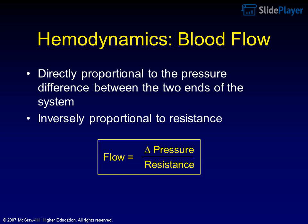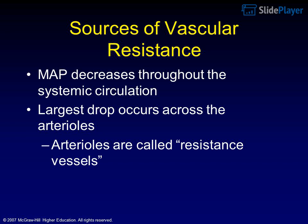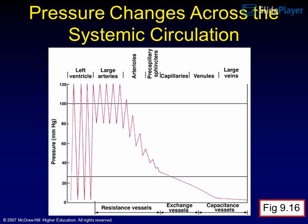Sources of vascular resistance: MAP decreases throughout the systemic circulation, and the largest drop occurs across the arterioles. Arterioles are therefore called resistance vessels. Pressure changes across the systemic circulation are shown in Figure 9.16.